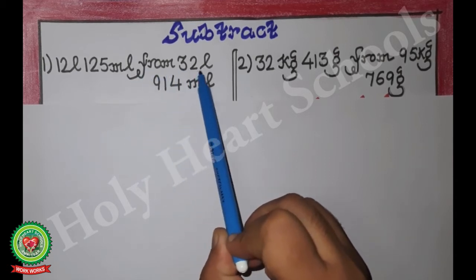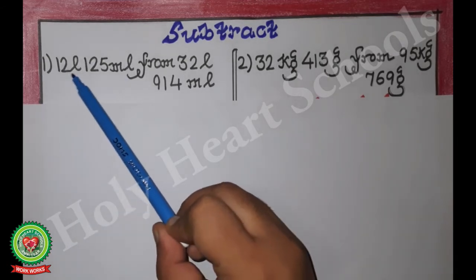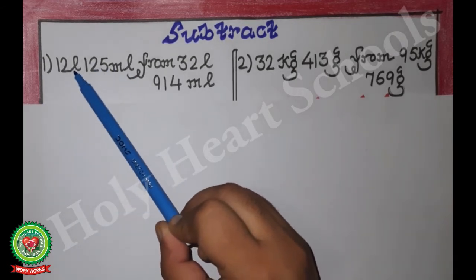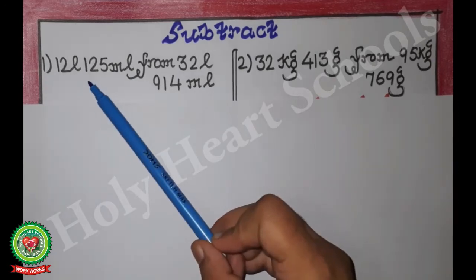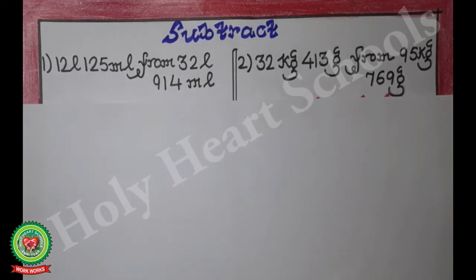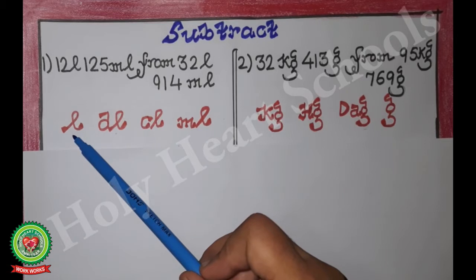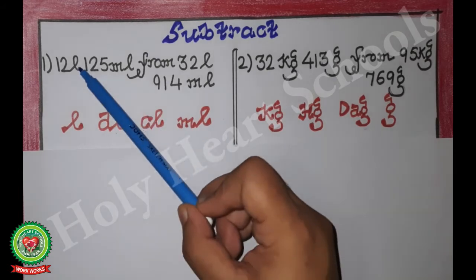Now students, what is the very first step? The same first step we used in addition sums — we will see which two units are given. First is liter and second is milliliter. This means we will write down the table from liter till milliliter: liter, deciliter, centiliter, and milliliter.